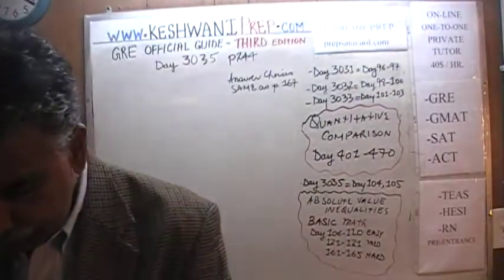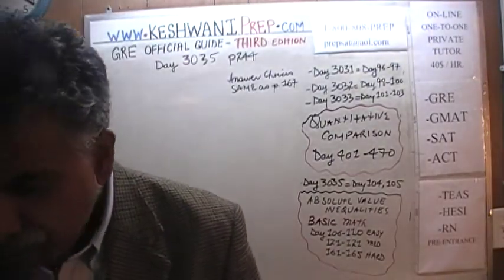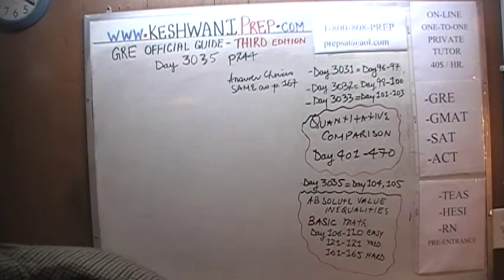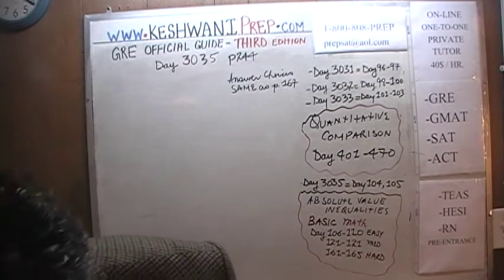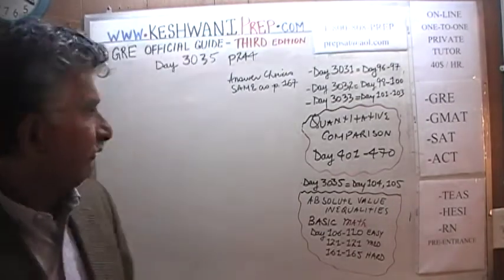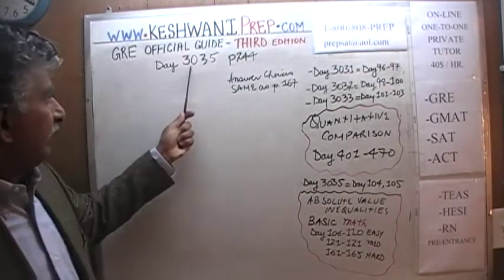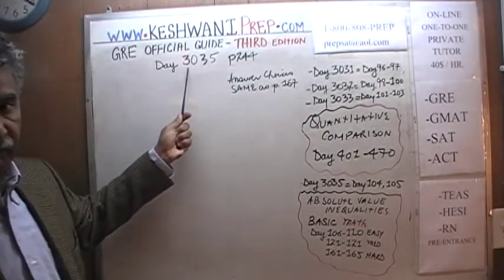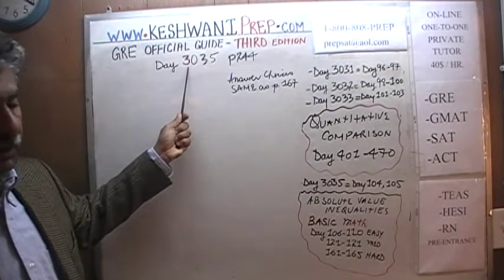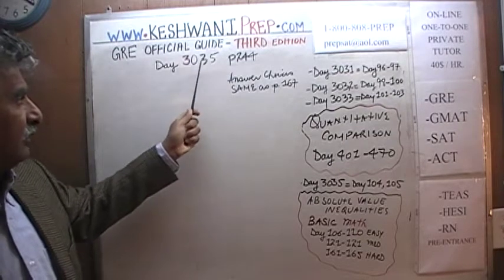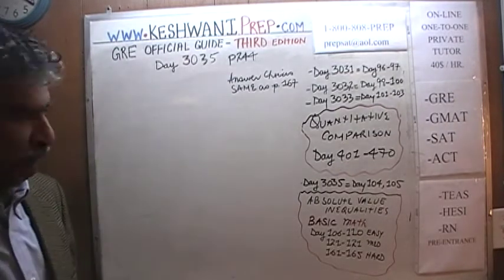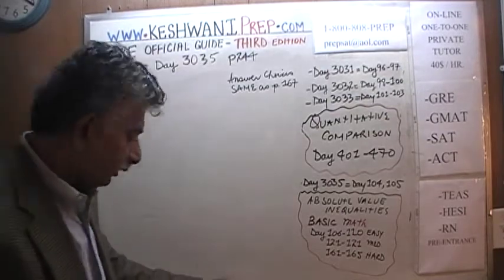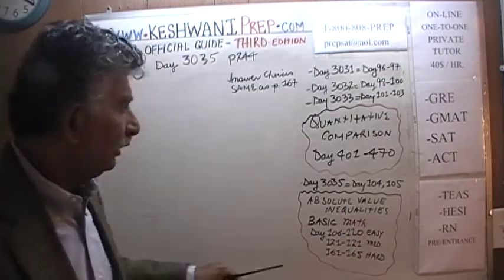Today is our lesson number 35. Lesson number 35, day 3035 — the 3 signifies that we are in the third edition, and day 35. We are on page number 244. Please turn to it.